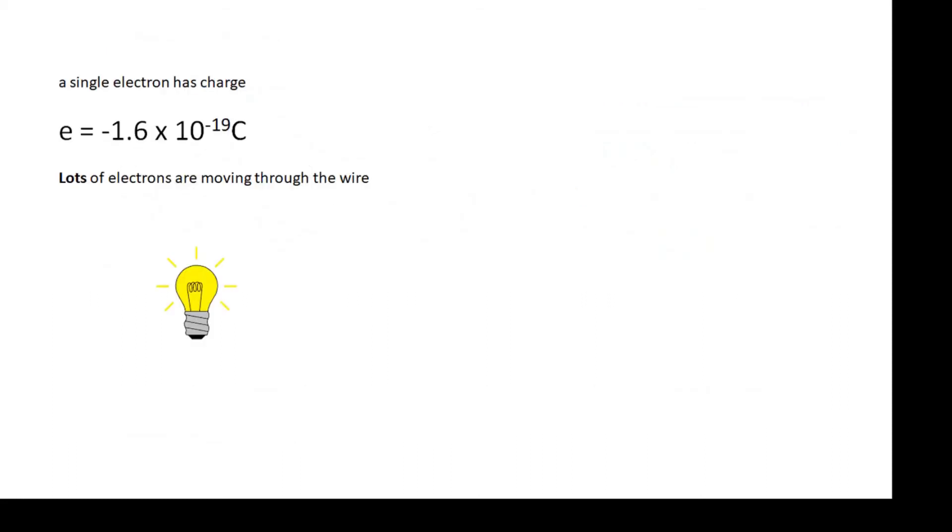Now a single electron has a very small amount of charge. It's minus 1.6 times 10 to the minus 19 coulombs. And that means a current of 1 amp is about 6 million million million electrons per second moving through the wire. A lot of electrons, each electron has a tiny amount of negative charge.